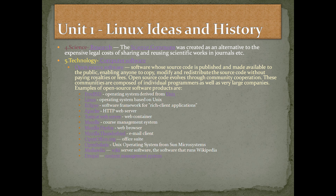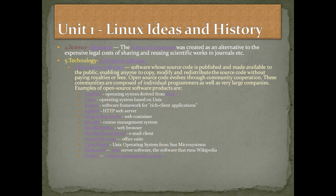Mozilla Firefox, a web browser — everybody knows it. Mozilla Thunderbird, an email client. OpenOffice.org, an office suite. Open Solaris — Sun Solaris has its open source version, Open Solaris, just as OpenOffice.org has its commercial version StarOffice. Red Hat has its Fedora, and SUSE Enterprise Linux has its open source version. Then we have MediaWiki, a wiki server software — the software that runs Wikipedia. Drupal, a content management system.